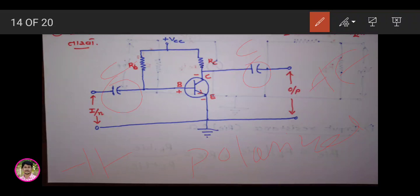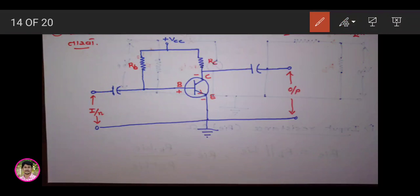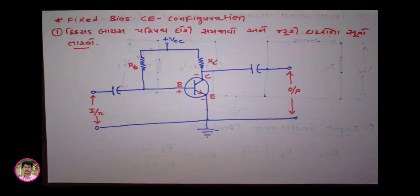This is the symbol. So if we are able to analyze the hybrid model, we will find the input impedance, voltage gain, and current gain.